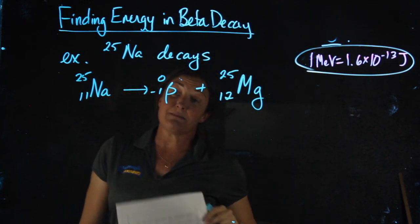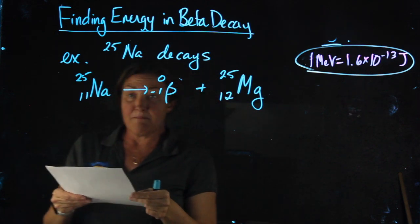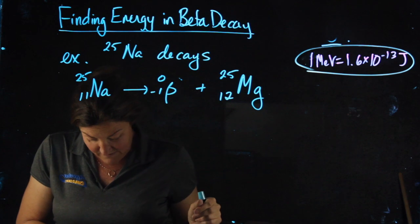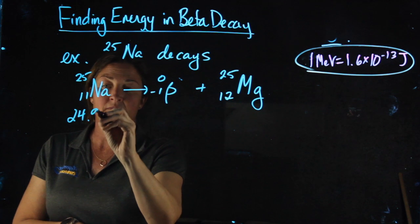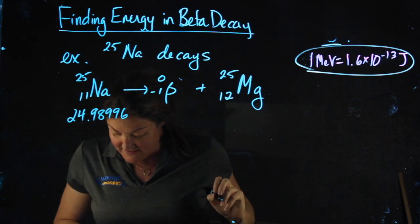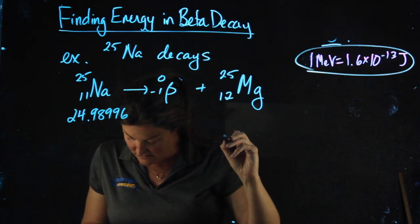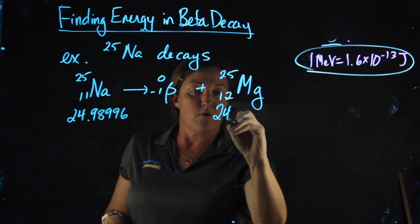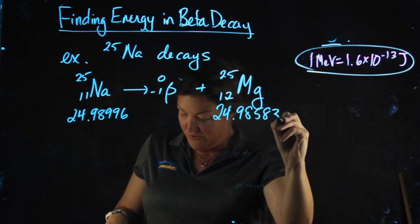Here you don't get the masses from my problem statement, you get the masses from this sheet. The mass of sodium 25, 24.98996. The mass of magnesium 25 is 24.985839.